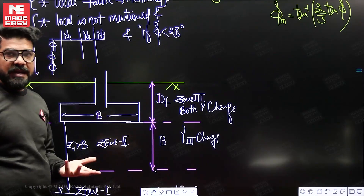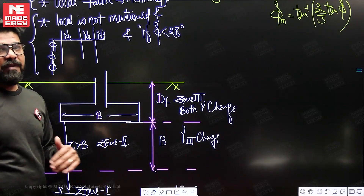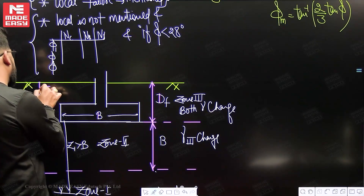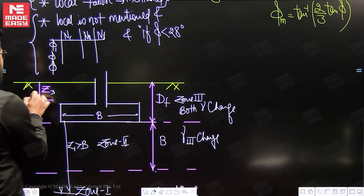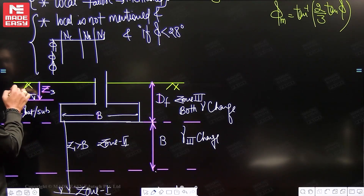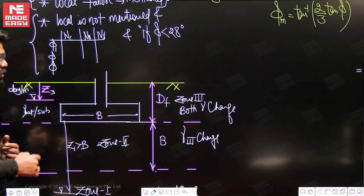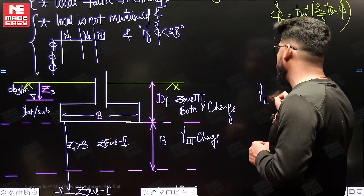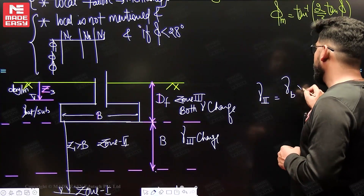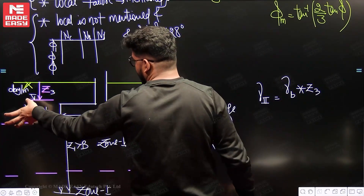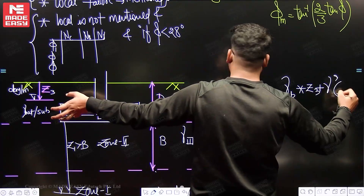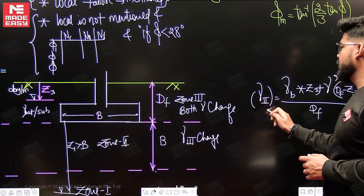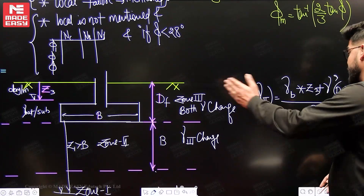There may be cases where the water table is in between zones — in that case we do a weighted average. For example, suppose the water table is at depth Z3 within Df. The soil below the water table is submerged, and above it is bulk/moist. The third gamma becomes γ_submerged, and the second (effective) gamma is calculated as: γ_eff = [γ_bulk·Z3 + γ_submerged·(Df − Z3)] / Df. This is the weighted average approach.